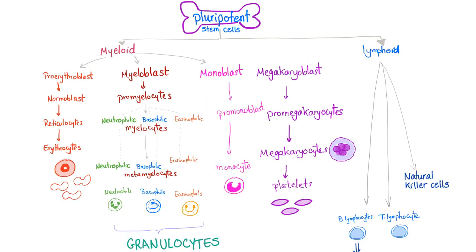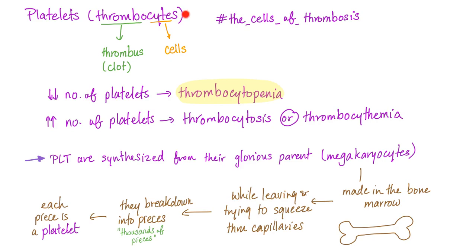We start with the pluripotent stem cells — not the multi, the pluripotent stem cells. The myeloid lineage gives us the megakaryoblast, megakaryocytes, and then the platelets. Platelets are not cells; they are just pieces of the megakaryocyte. Thrombocytes — the cells of thrombosis — when decreased in number, it's called thrombocytopenia.